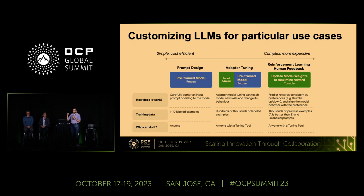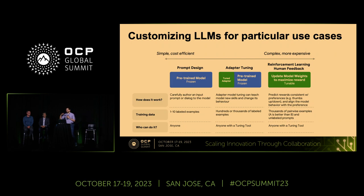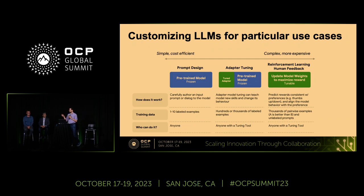At the other end of the spectrum, you have full fine-tuning, where you do reinforcement learning with human feedback. You provide a lot of your data and you completely change the way the model is trained — lots of quality, but very expensive. In the middle, you have adapter tuning, where you provide an extra layer on top of a frozen model to improve it for your particular use case. The TLDR is that there are many ways customers and users around the world can improve the model for their specific use case.